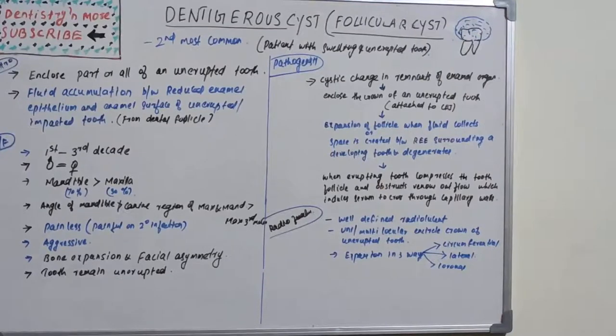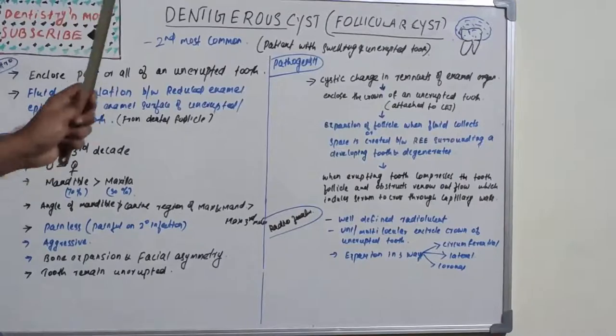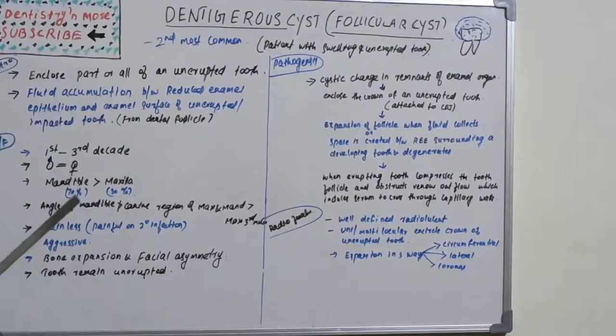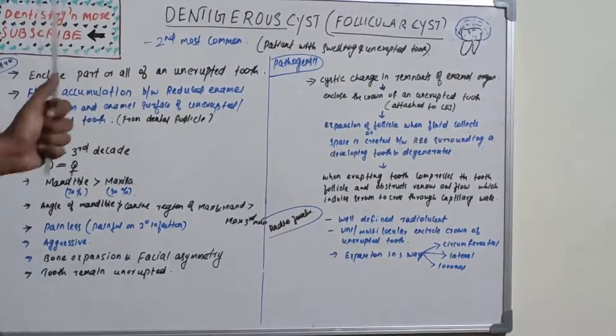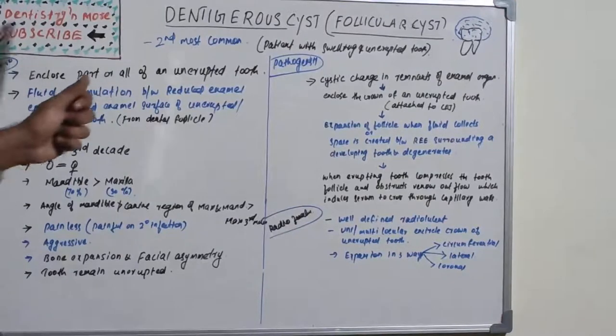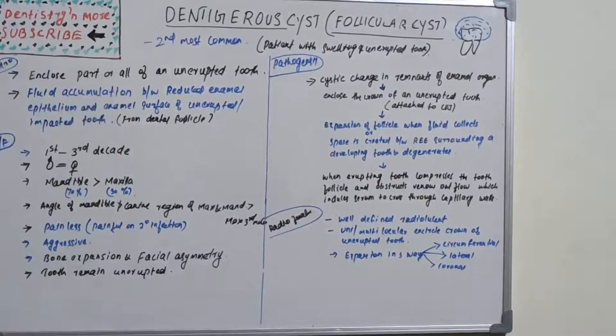Hello everyone, welcome back to a new session on dentistry and more. Today's topic is dentigerous cyst. Last class we covered radicular cyst or periapical cyst. The second most common cyst after radicular cyst is dentigerous cyst, so let's see the details.